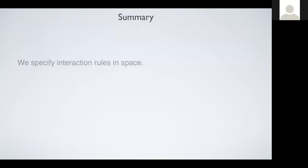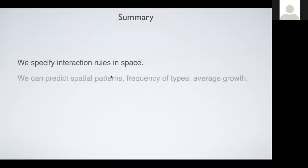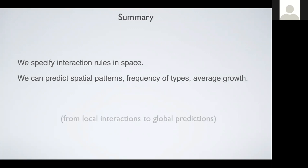To summarize this part on pair approximation: what we did was to specify the interaction rules by taking those rules either directly from the data or from the biophysical model that maps molecular events — uptake, leakage, and diffusion — to individual interaction rules. From those rules, we can predict the spatial patterns, the frequency of types, and their average growth rate using this pair approximation framework. This allows us to go from local interactions to global predictions for communities.